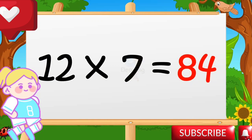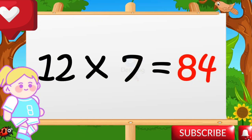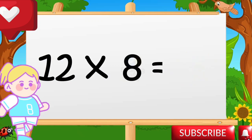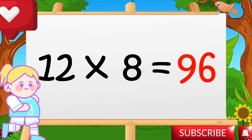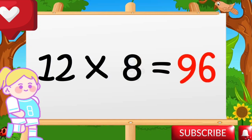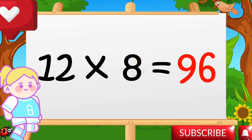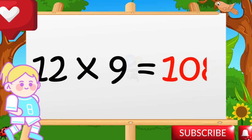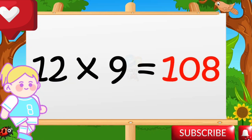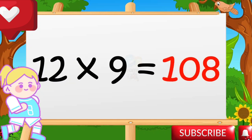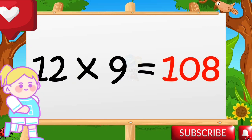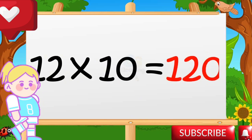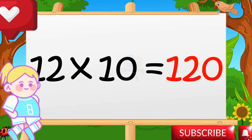12 sevens are 84. 12 eights are 96. 12 nines are 108. 12 tens are 120.